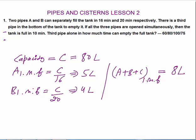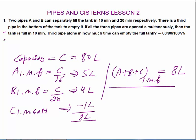Pipes A and B together are filling 9 liters per minute. But the net fill with all three pipes is only 8 liters per minute. So by common sense, pipe C must be exiting 1 liter per minute, which is why the net fill is 8 liters.